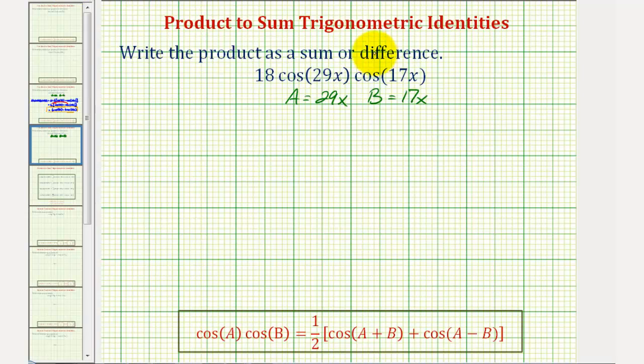And therefore 18 cosine 29x times cosine 17x would be equal to 18 times one-half times the quantity cosine A plus B, which would be cosine of 29x plus 17x, that would be 46x. And then we have plus cosine of A minus B, which would be 29x minus 17x or 12x.